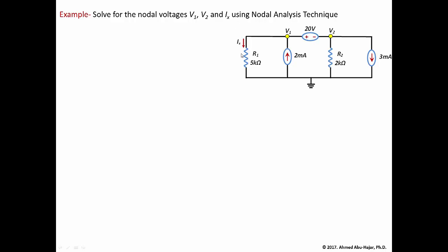The first thing we do is recognize the nodes in the circuit. This is the reference node, which reads zero volts relative to any other nodal voltage. We also have V1 and V2. Looking at the circuit, we realize there is a voltage source — the 20-volt voltage source — between two non-reference nodes, and this creates a problem.